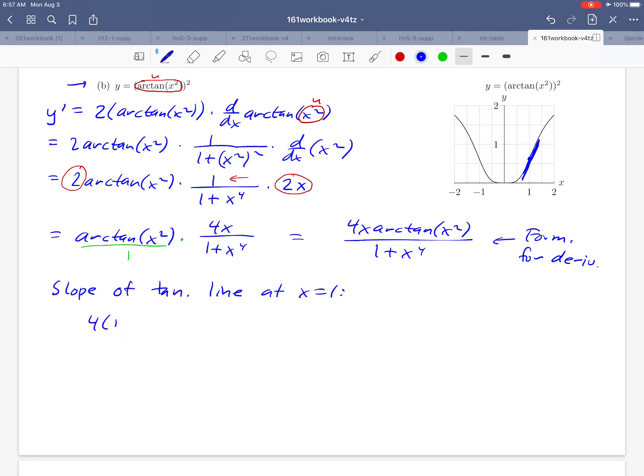We're going to get 4 times 1 arctangent of 1 squared over 1 plus 1 to the fourth. Let's simplify that down a little bit. Arctangent of 1, 1 over 1, 1 plus 1 to the fourth is just 2. Then we come to a situation: how do we get a number for arctangent of 1?